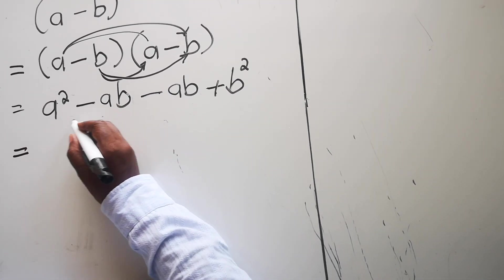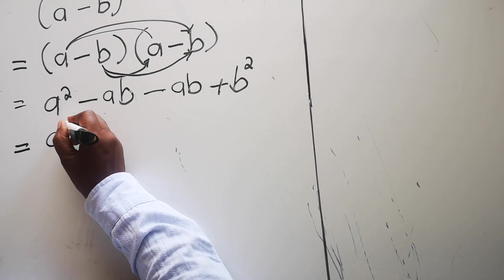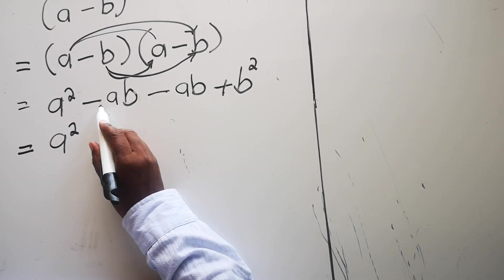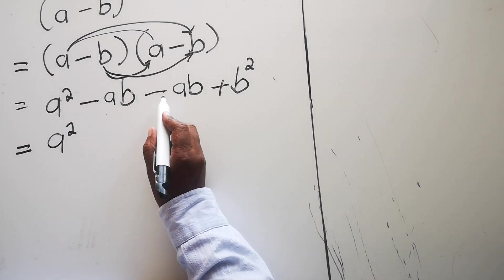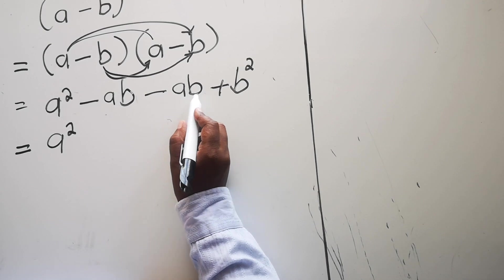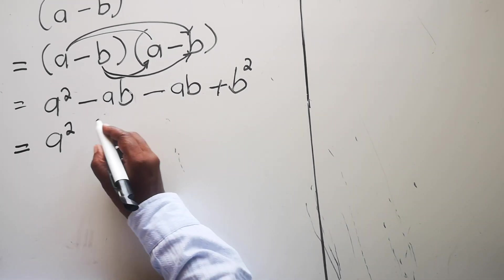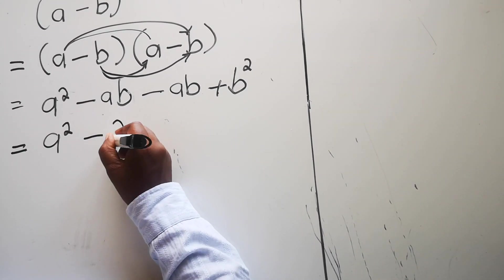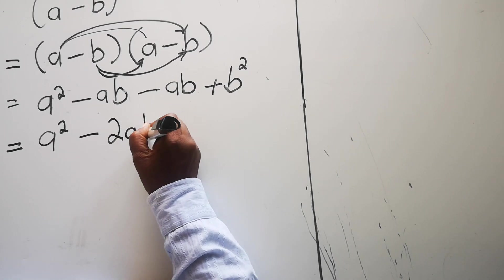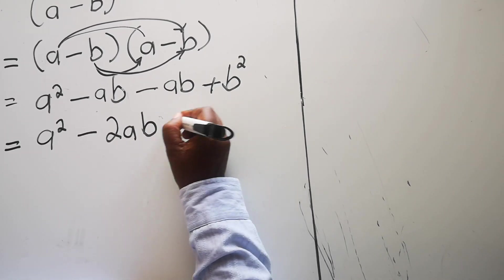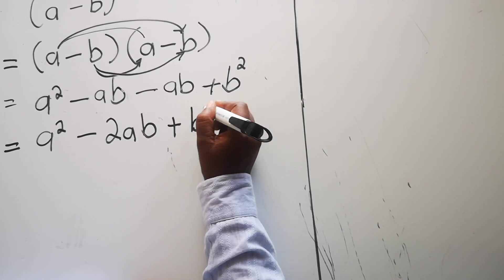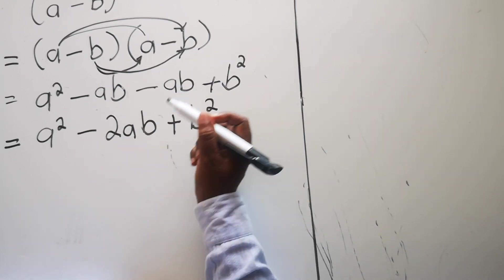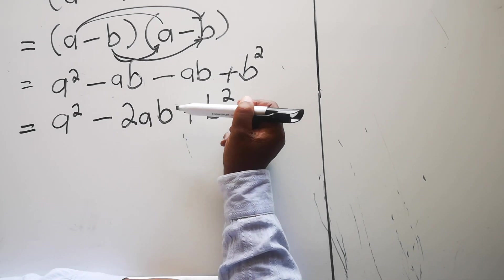Then we look at the like terms. a squared stays. For the like terms, we have -ab and -ab, so we get -2ab. Then we have +b squared. So the answer is a² - 2ab + b². And there's an easier way to do this where you skip these two steps.